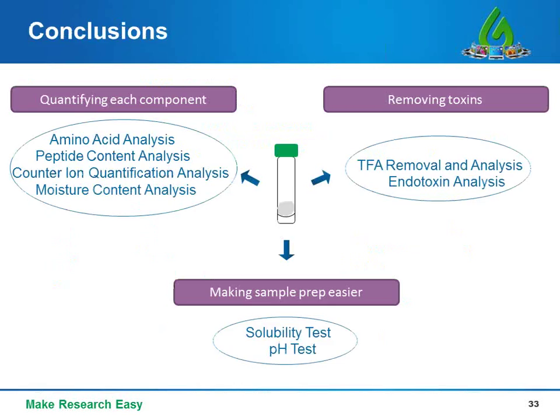In summary, GenScript's AcuPepQC service provides comprehensive examination of your custom peptides. It contains three main test categories: for quantification of each component, amino acid analysis, peptide content analysis, counter-ion quantification analysis, and moisture content analysis can be chosen. To remove toxins from custom peptides, TFA removal and analysis and endotoxin analysis can be chosen for better control of your experiment. To make sample preparation easier, solubility testing and pH testing are also available.